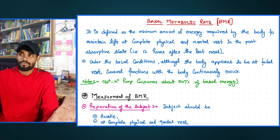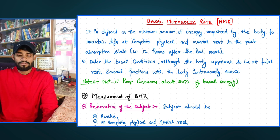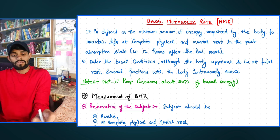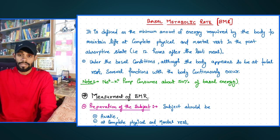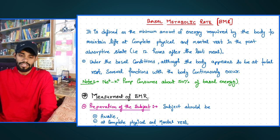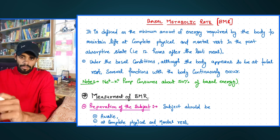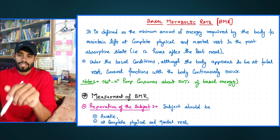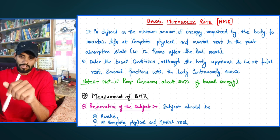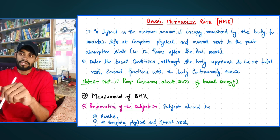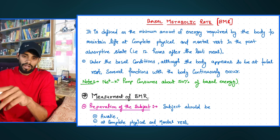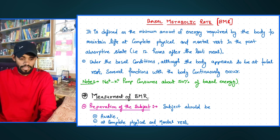Now the most important topic in biochemistry — BMR, Basal Metabolic Rate, also called basal metabolism. To measure BMR, a person is kept fasting, and after 12 hours in a resting condition, we check their BMR. BMR is measured after this 12-hour post-absorptive state.